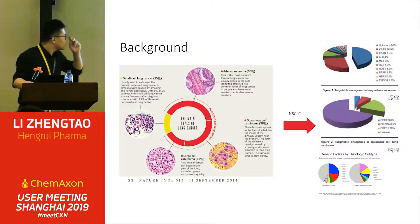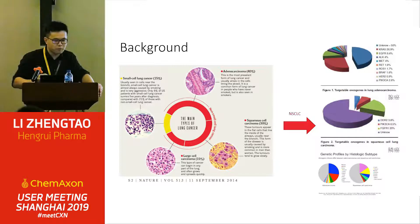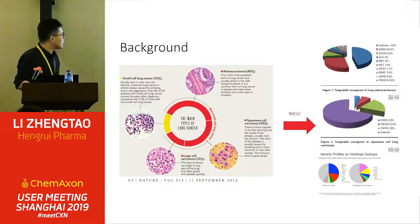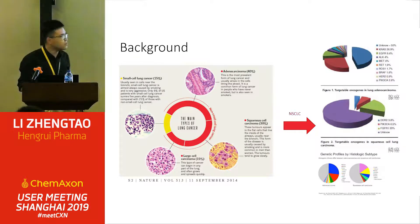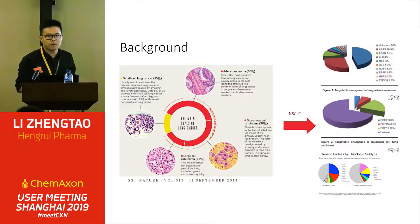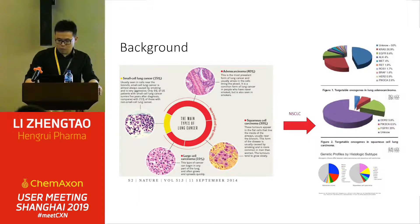A little bit about the background. For lung cancer, there are several types. First, small cell lung cancer accounts for 15% of all patients. Then adenocarcinoma from non-small cell lung cancer, and also squamous cell cancer and large cell cancer. From the targeted oncogenes in non-small cell lung adenocarcinomas, there are a variety of oncogenes, such as KRAS, which occupies about 30% of all mutations, and EGFR accounts for about 10%, and also ALK and MET as other oncogene drivers.